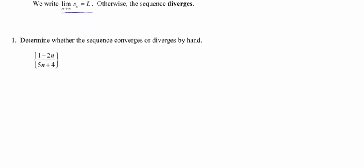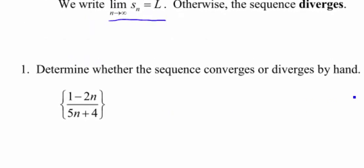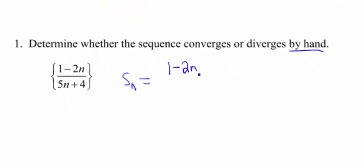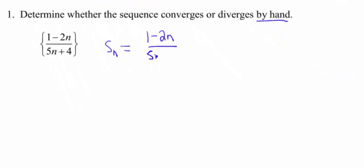Number one, determine whether the sequence converges or diverges, and we're gonna do this one by hand. We've got the sequence 1 minus 2n over 5n plus 4. So our S sub n is 1 minus 2n over 5n plus 4.